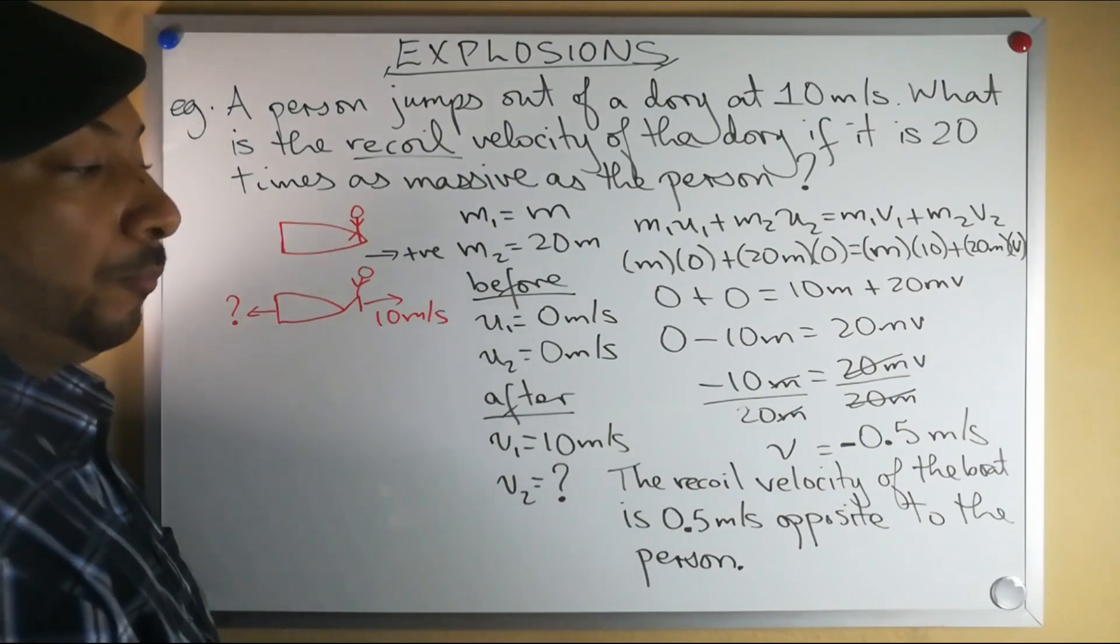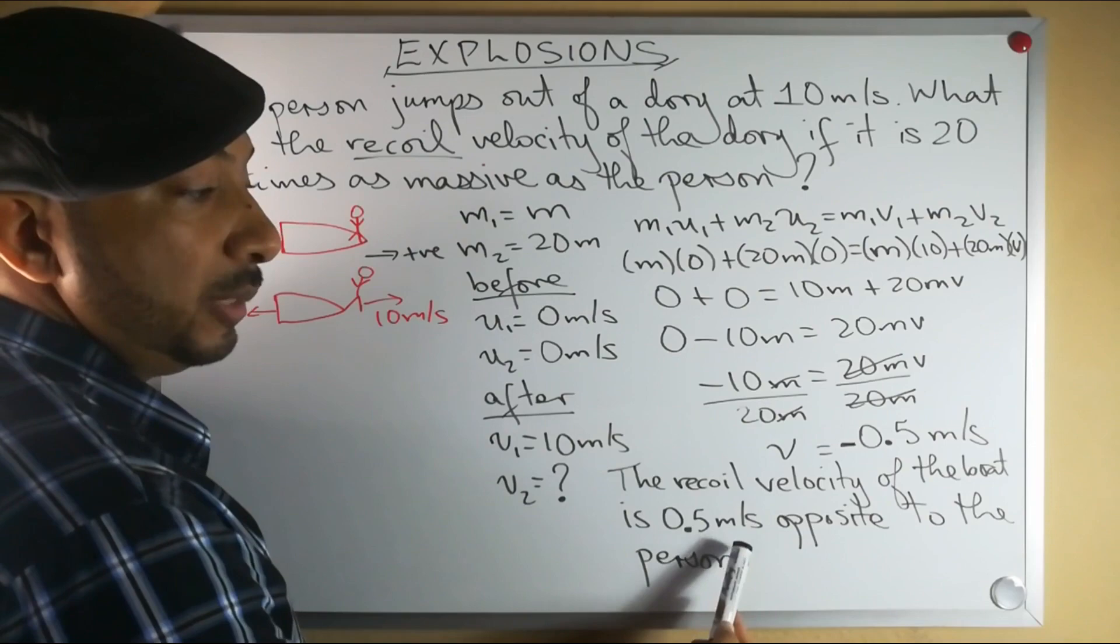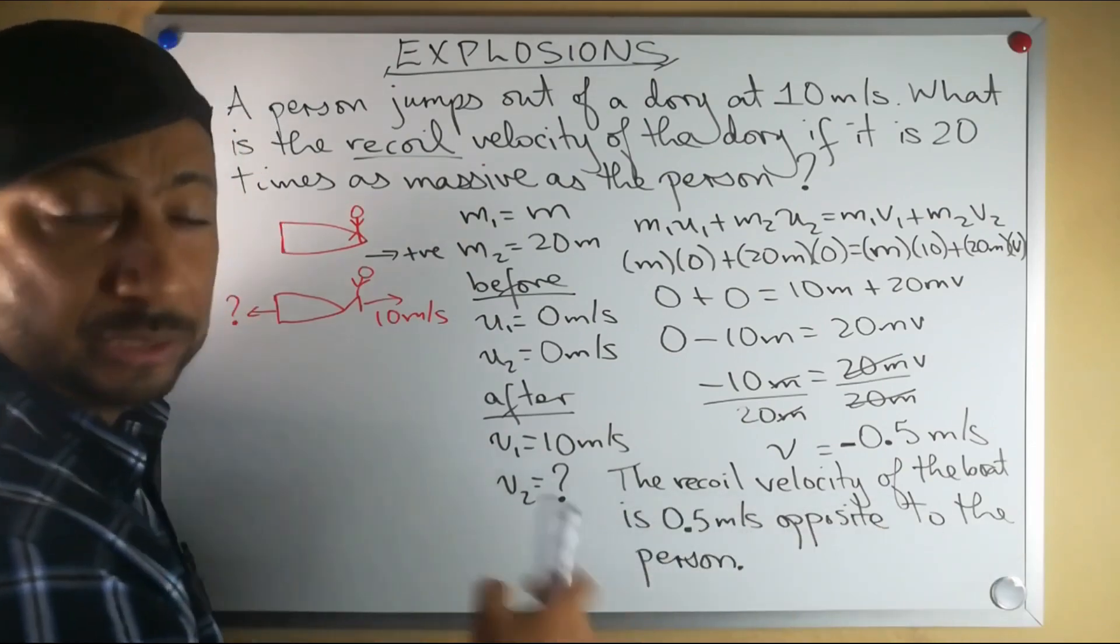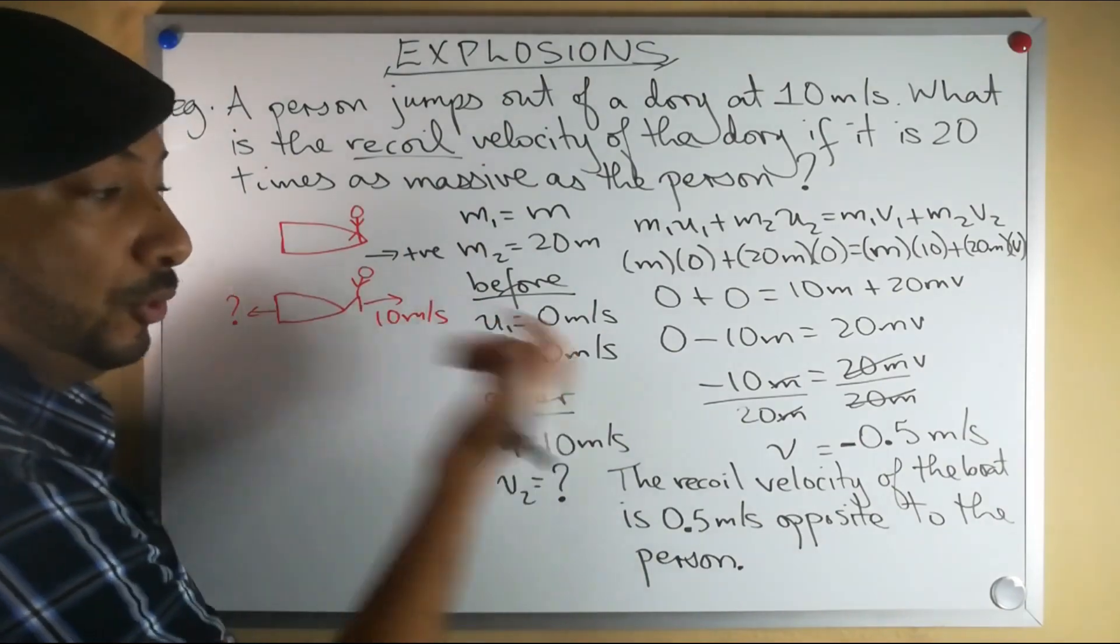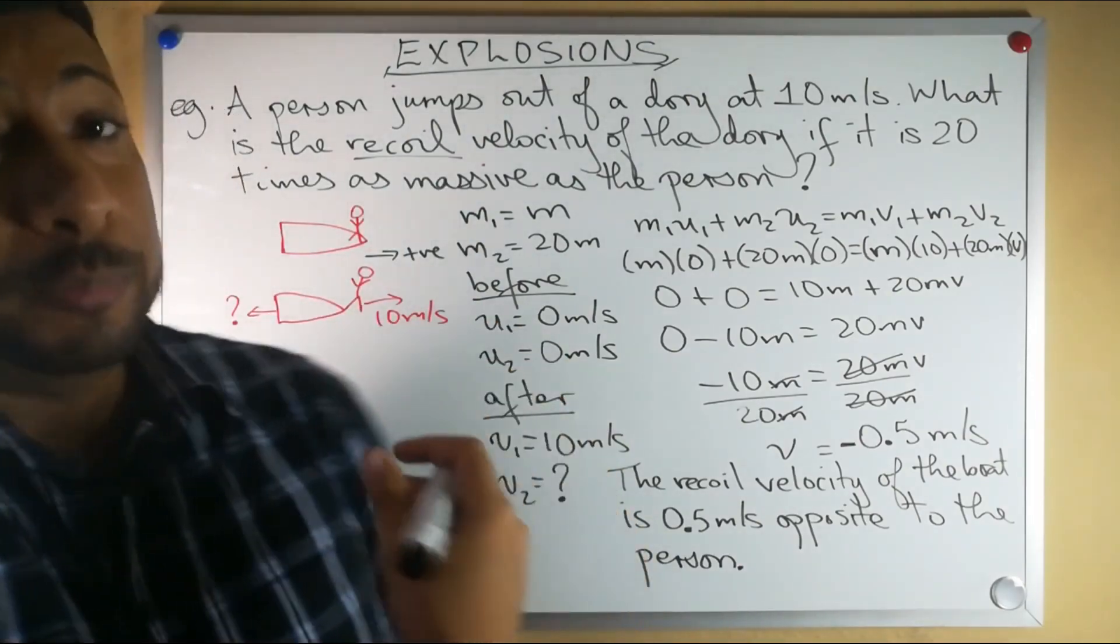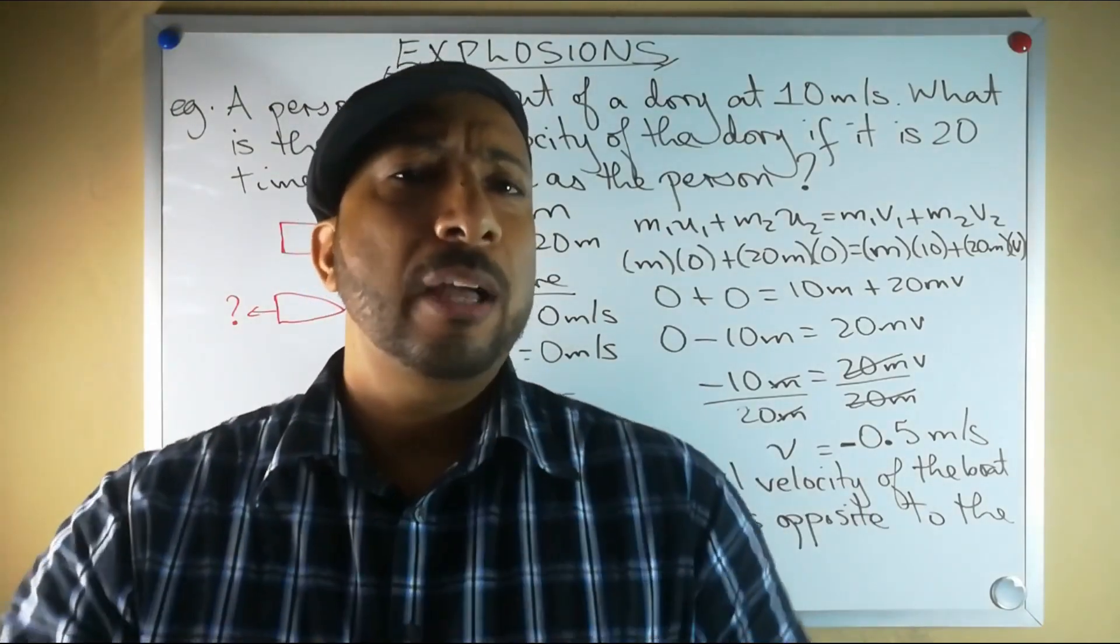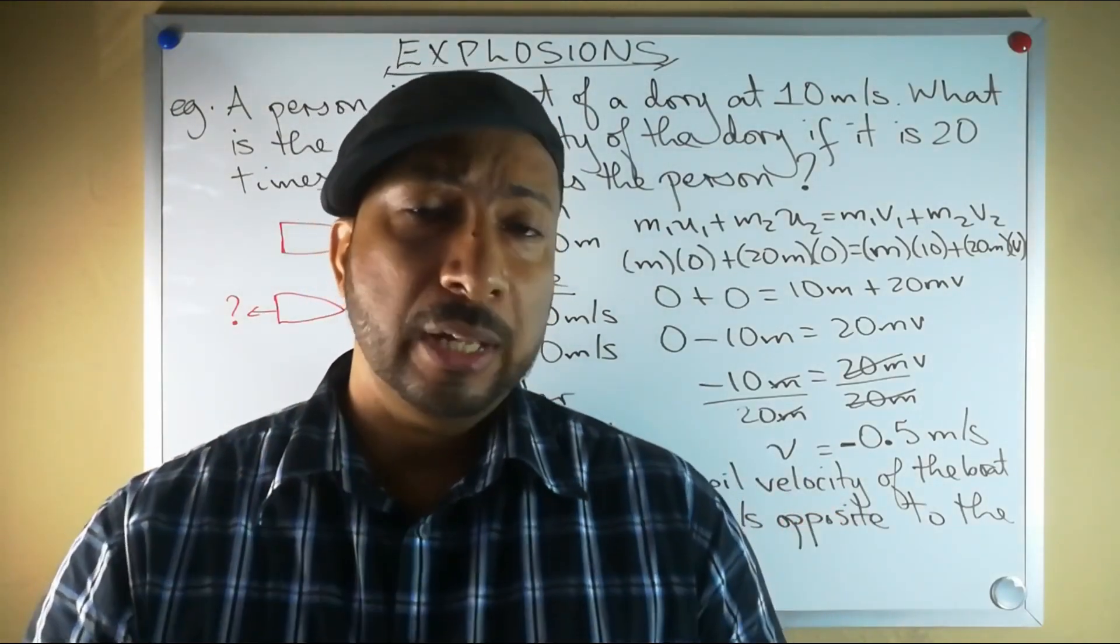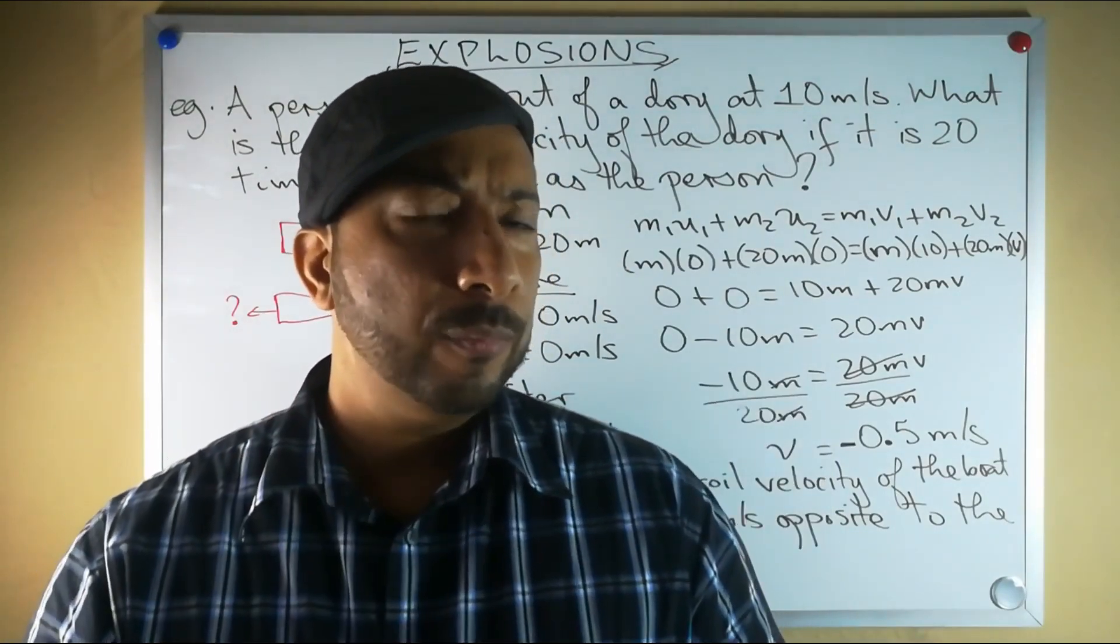So the recoil velocity of the boat is 0.5 meters per second opposite to the person. In general, you could say if you draw your diagram this way that it is to the left, but in general it would just be opposite to the person. And that is always the case. You may have gone to the keys before, and you know that when you step off the boat there is somebody there to hold the boat.